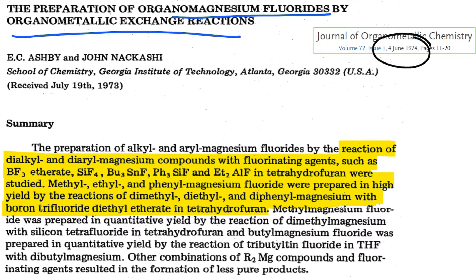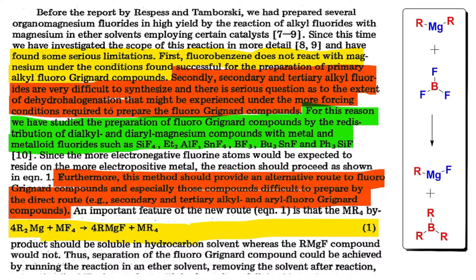Let's look at the preparation of organomagnesium fluoride by organometallic exchange reaction. This is from an old article — June 1974. The preparation of alkyl and aryl magnesium fluoride by reaction of dialkyl and diaryl magnesium compounds with a fluorinating agent such as BF₃·etherate, silicon tetrafluoride, or tributyltin fluoride in THF.